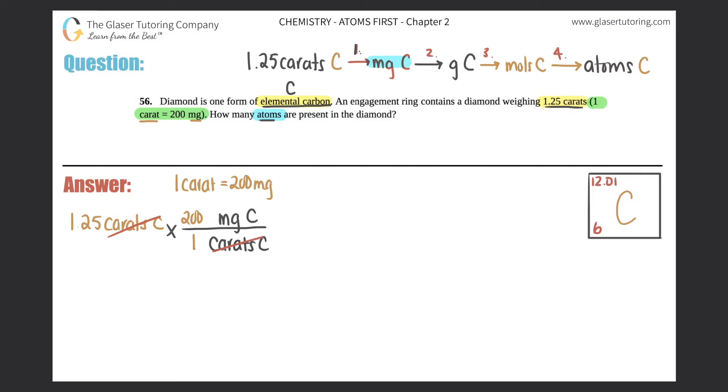What's the number between this conversion? Well, they tell us that one carat equaled 200 milligrams. So one carat equals 200 milligrams, and that's how you cancel out the word or the unit carat, and now we're at milligram. The next step was to get to grams of carbon because from there then you could get to moles and then finally to atoms.